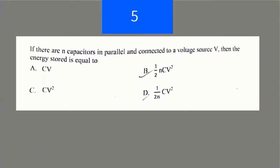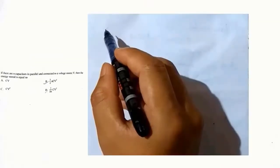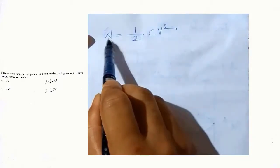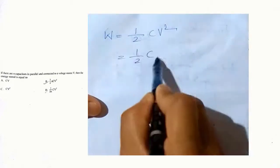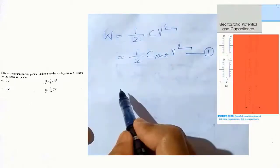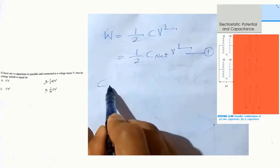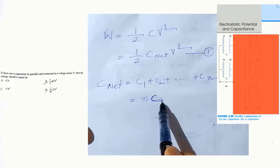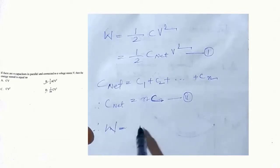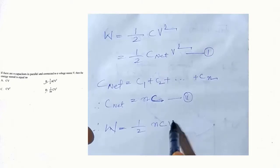In this question, we have N capacitors connected in parallel to a voltage source V. We have to find the energy stored in it. In case of a capacitor, we know that energy stored equals work done, which equals half times the capacitance times the applied voltage squared. This is for one capacitor. In case of N capacitors in parallel, the net capacitance will be N multiplied by the capacitance C of each capacitor. Substituting, the work done or energy stored becomes (1/2)NCV squared. So option B is the correct answer.